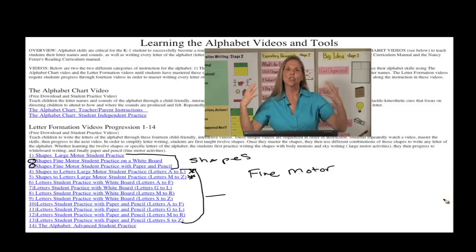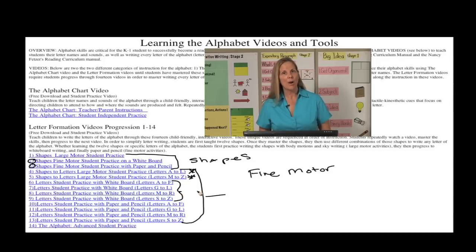Once they can do the large motor activities in videos 4 and 5, then we move them to the whiteboard writing, more fine motor type of activities, where they're writing every letter of the alphabet on a whiteboard. These have been broken up into videos 6 through 9, so that the students are only learning a chunk of letters at a time that they're actually writing on the whiteboard.